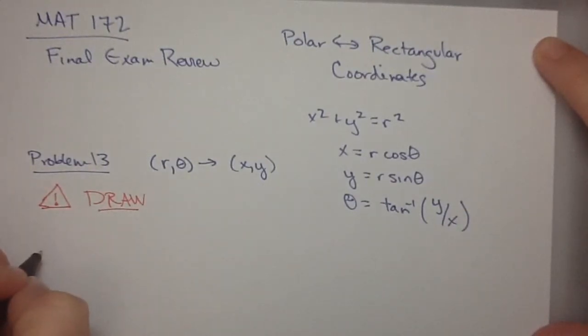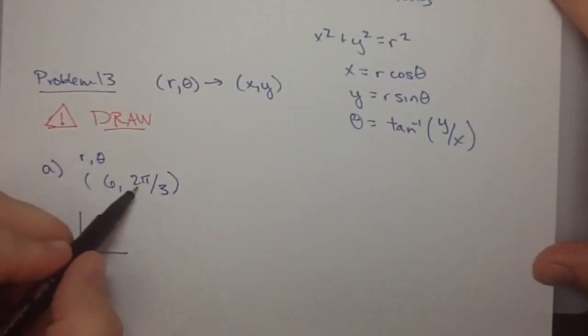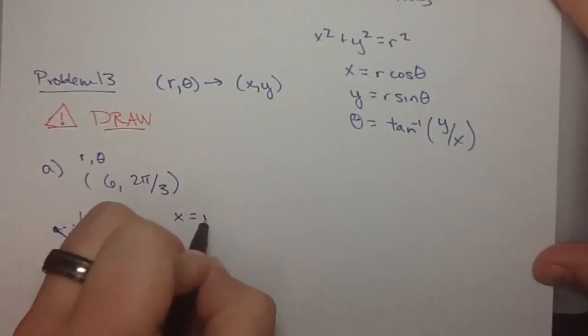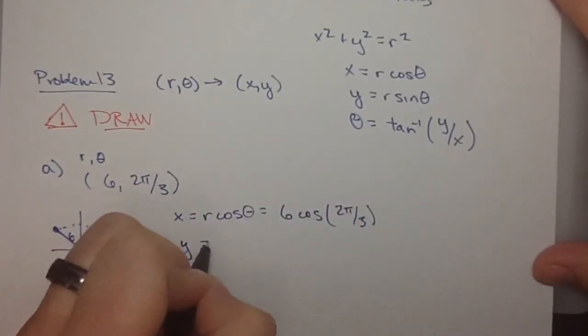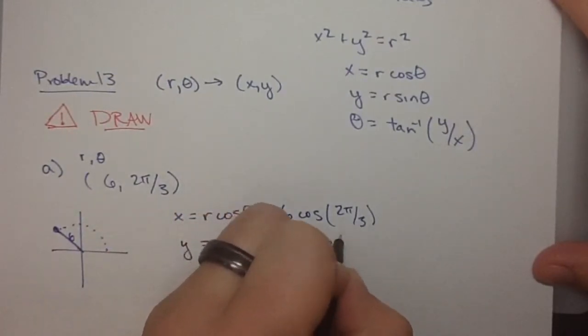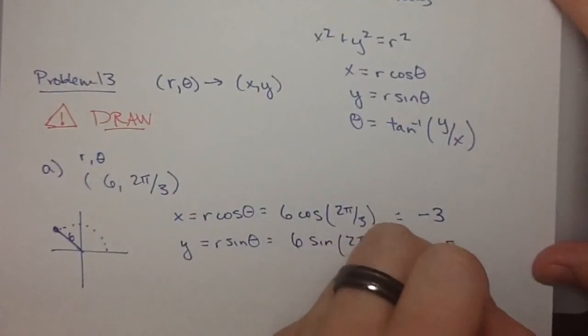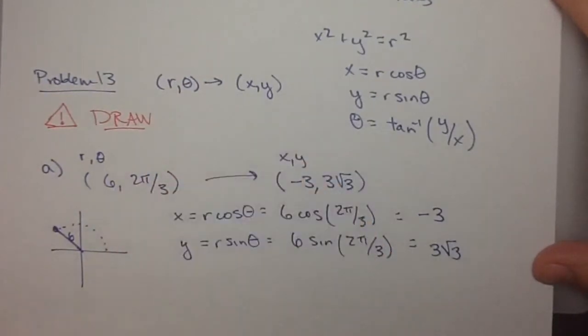So in part A, they give us r and theta are 6 and 2 pi over 3. So the first thing I'm going to draw is theta is 2 pi over 3, so that gets me over here, and r is 6. So I know I'm in the second quadrant, and I should have a negative x and a positive y. So using what we know, x equals r cosine theta, so that's 6 cosine 2 pi by 3, and y is r sine theta, so that's 6 sine 2 pi by 3. And so this gives us x is negative 3, and y is 3 root 3. So r and theta to x and y, we have negative 3, 3 root 3, and that's how it's done.